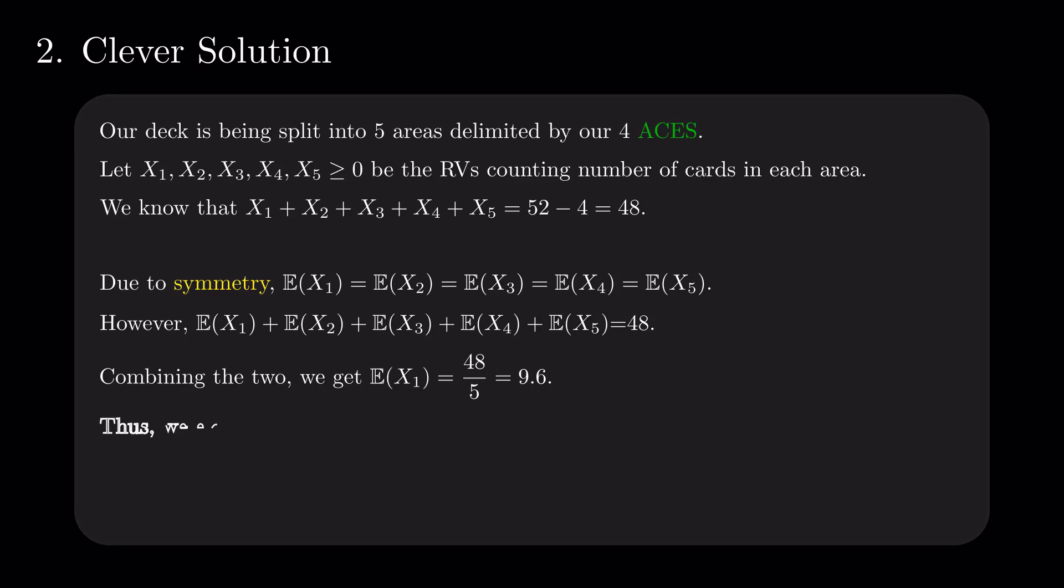We are only left to add 1 to this number to account for the ace that bounds this group. This new way of looking at the problem explains perfectly why the increment in the previous solution was 0.2. When adding one more card to the deck, we are distributing this value between five groups, hence the increase of 1 divided by 5.